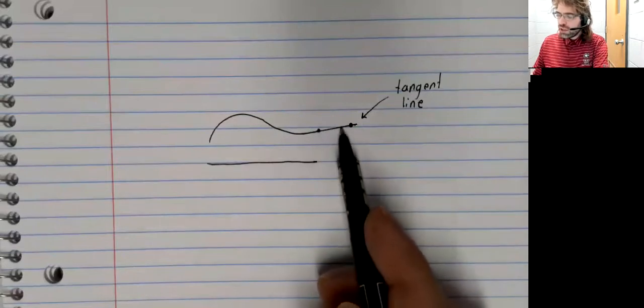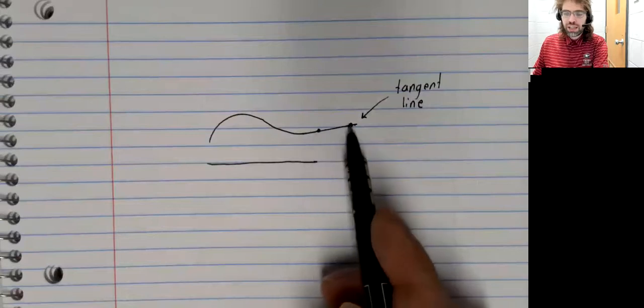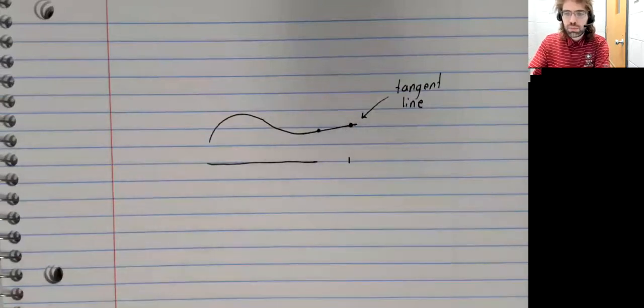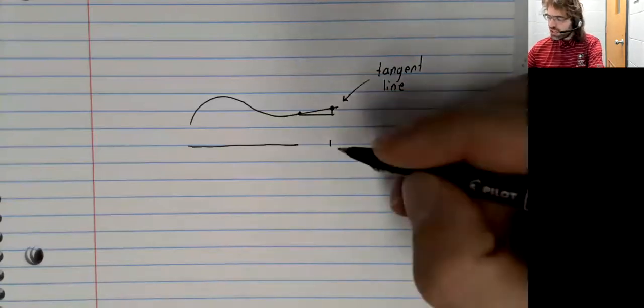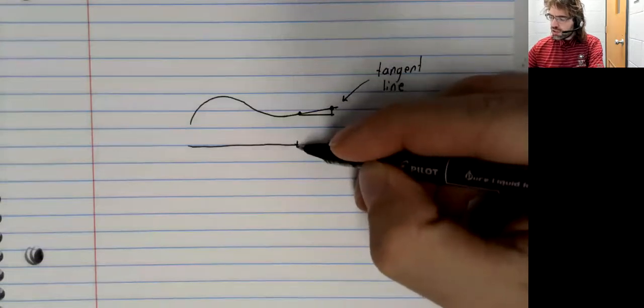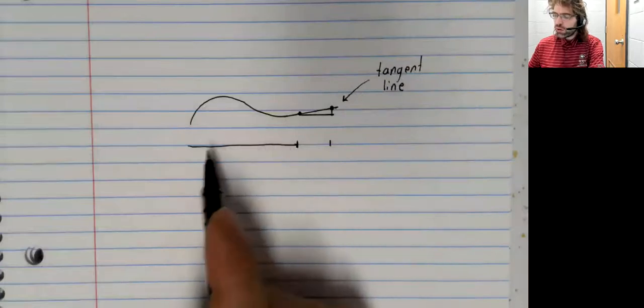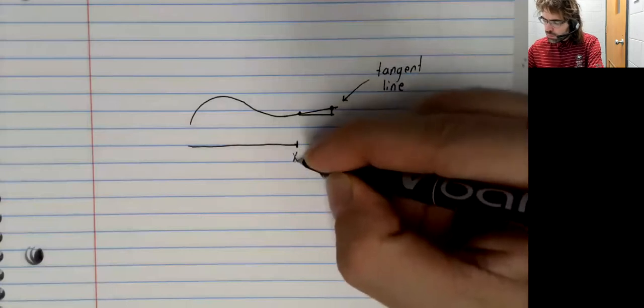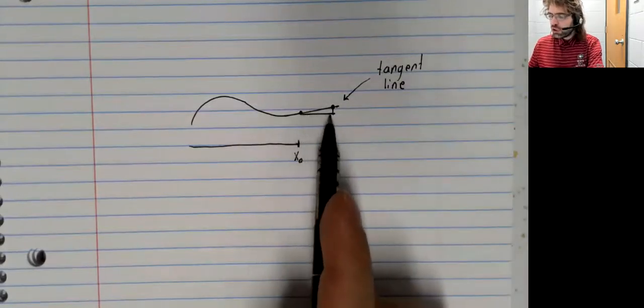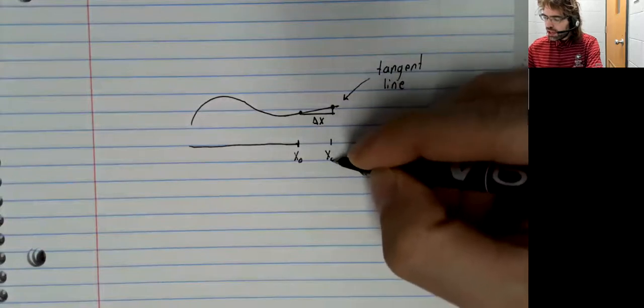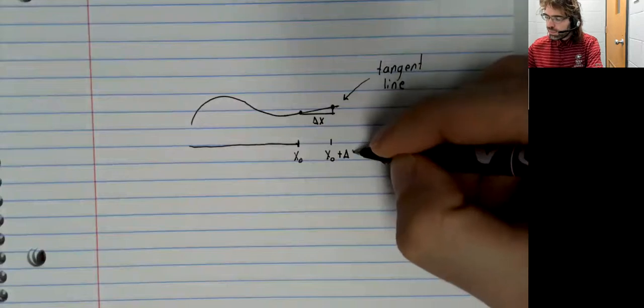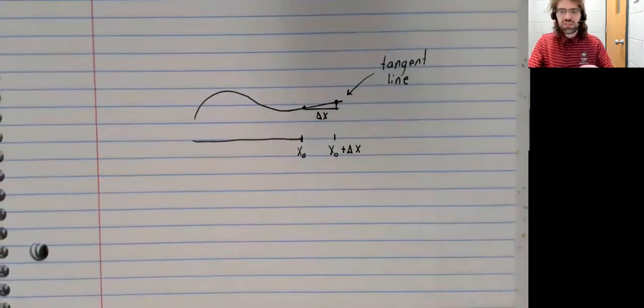I'm going to use this segment of the tangent line to draw in a right triangle, like so. I'm also going to label some things: that the rightmost endpoint of this interval, where the function is known, be called x sub zero, and that this horizontal distance be called delta x.